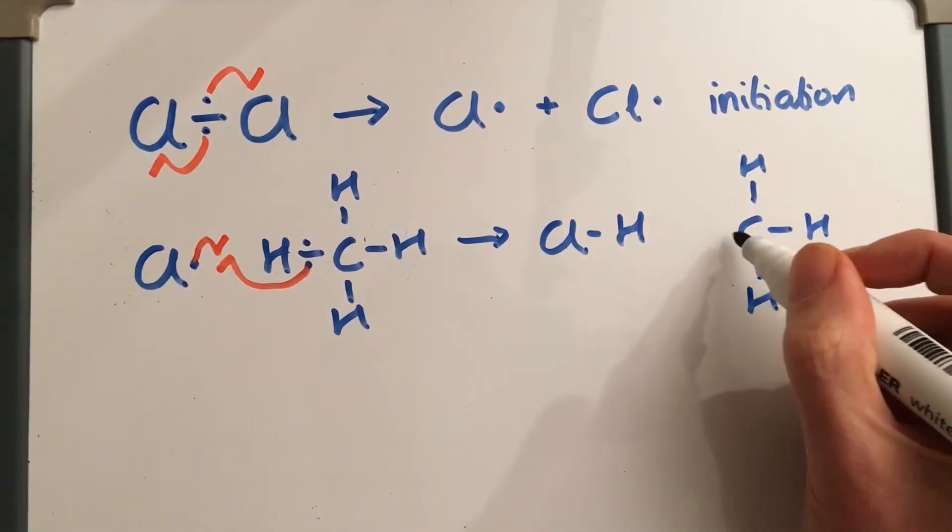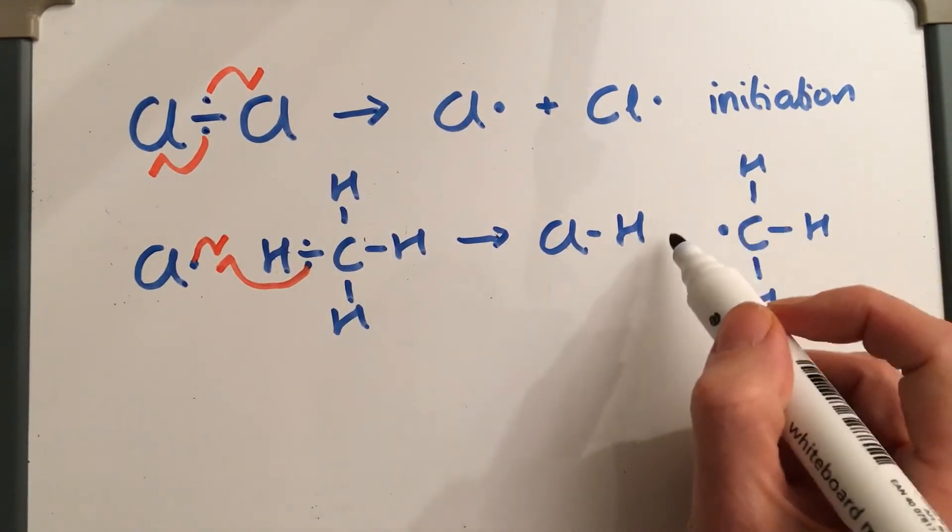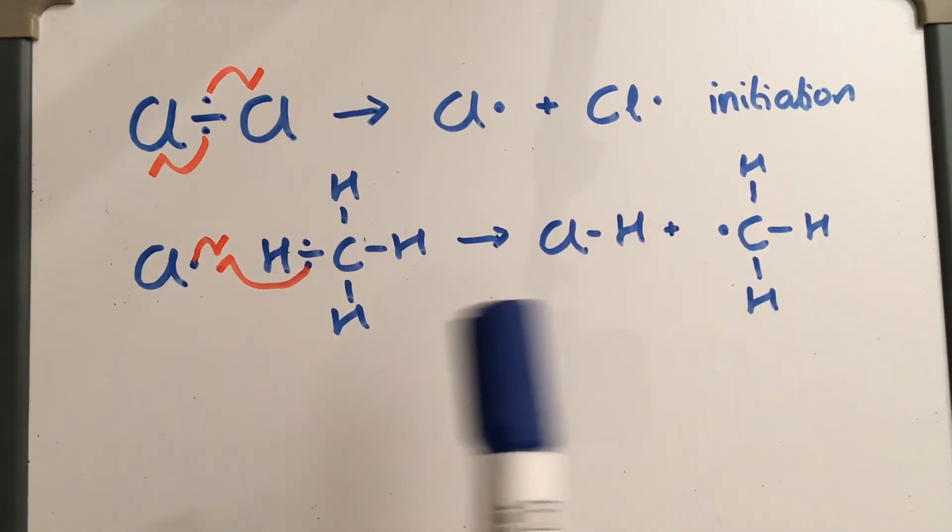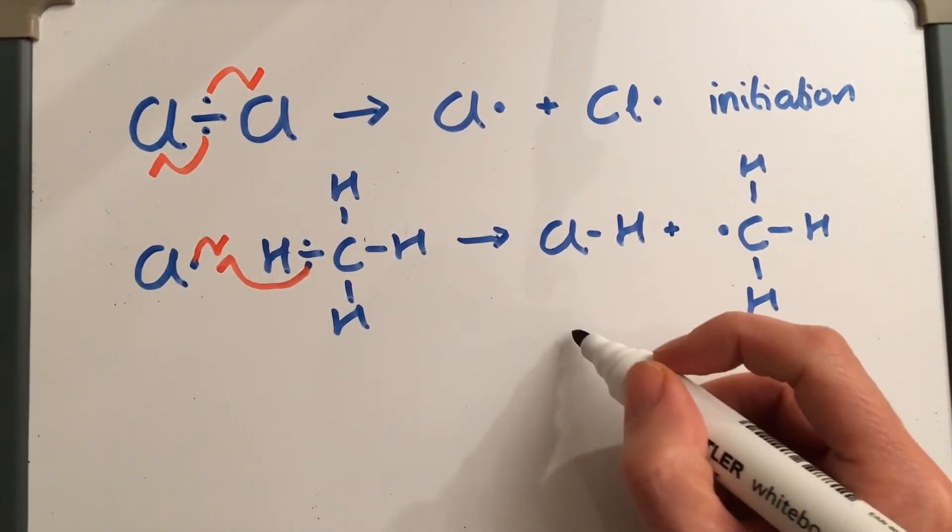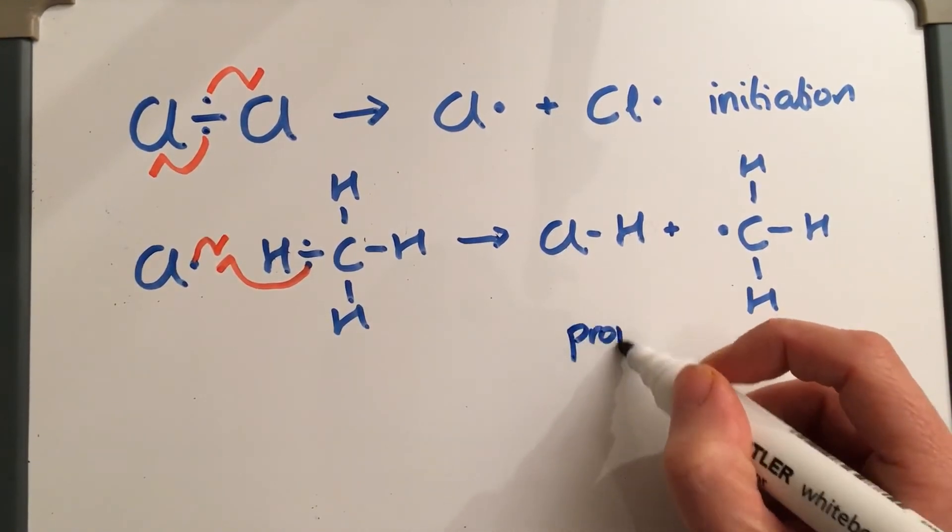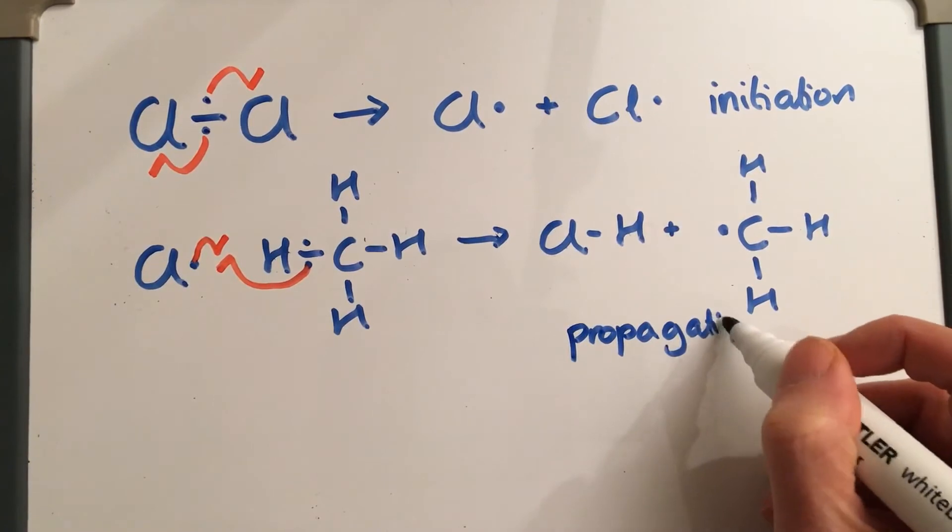So that is our methyl radical. If you look here, we've got a radical here and a radical here, so we've got radicals in the reactants and the products - so that's a propagation step.